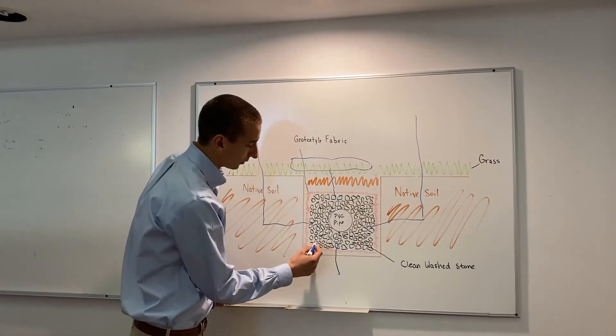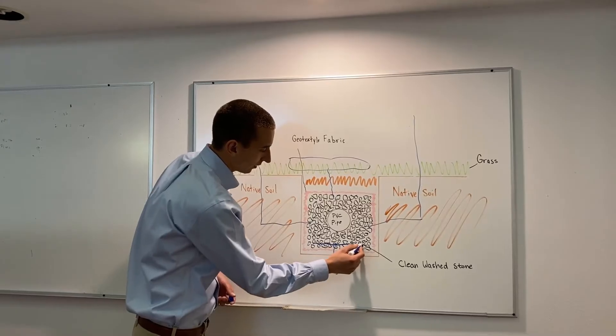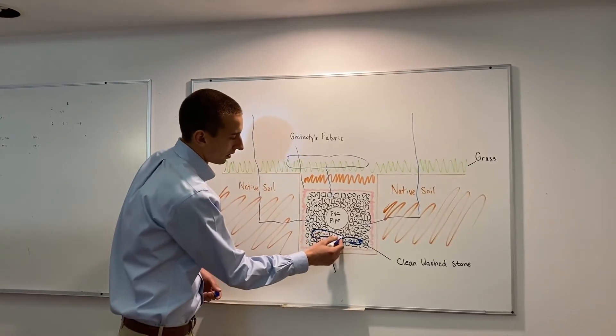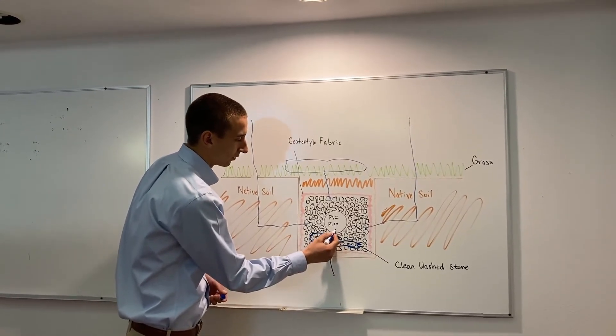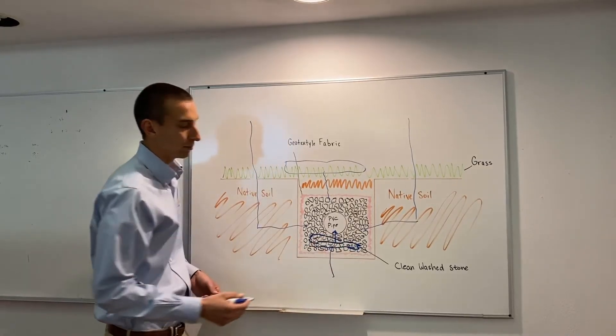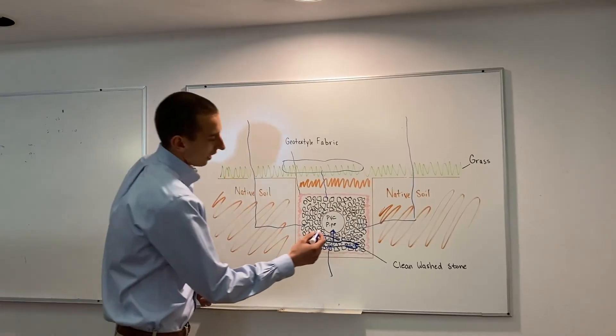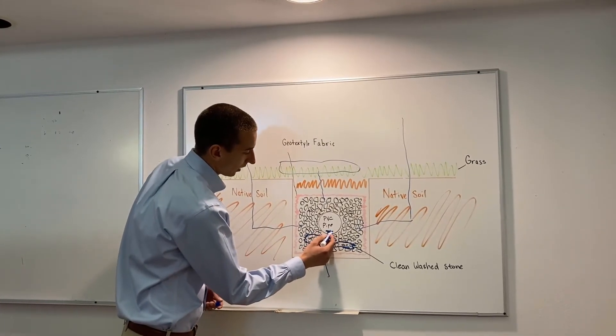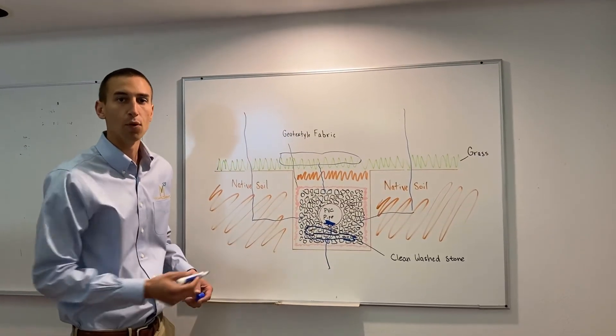As the water enters the French drain, it will fill up inside this clean washed gravel and eventually it will fill up and enter the holes in the bottom of the PVC pipe. After that water enters the PVC pipe, it will fill and then be swept to an exit point.